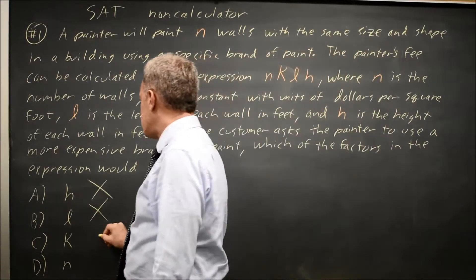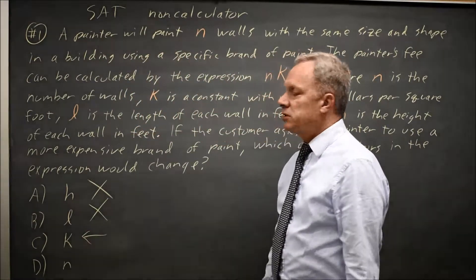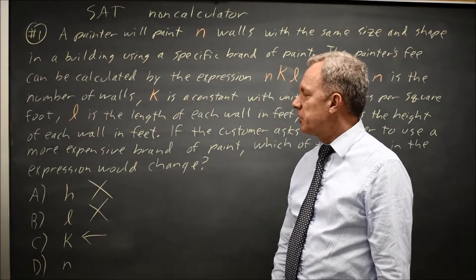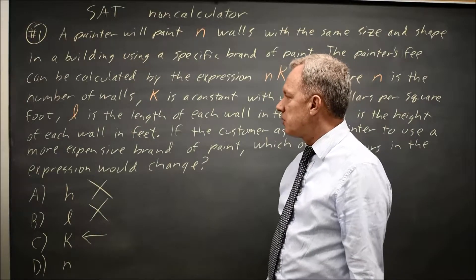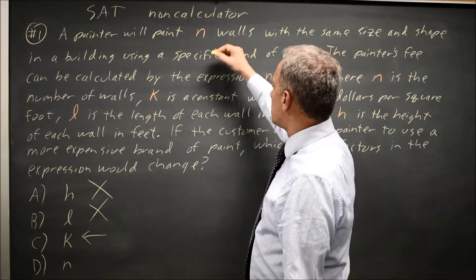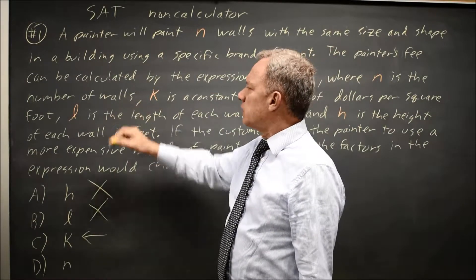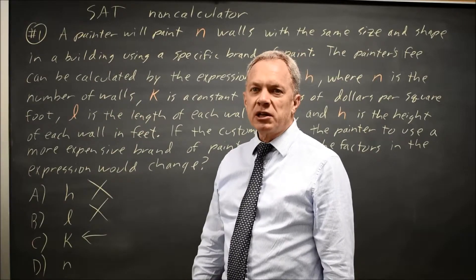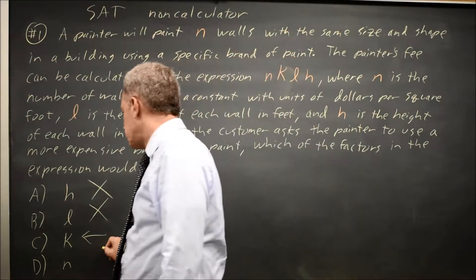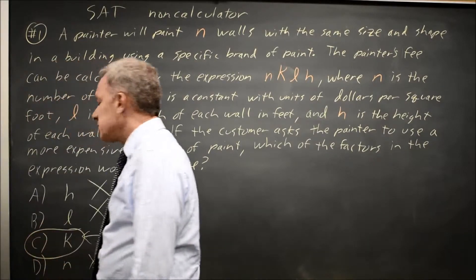K is a constant with units of dollars per square foot. It makes sense that we might need different dollars per square foot with a more expensive paint, so we'll probably come back to that one. Choice D, N is the number of walls. The number of walls in the building doesn't change just because you're using different paint, so choice D is wrong.